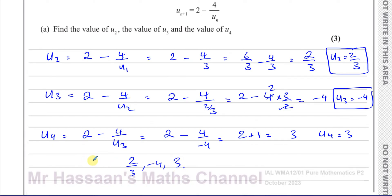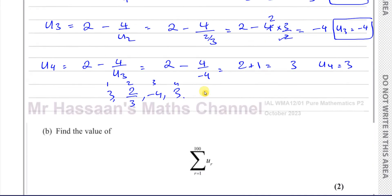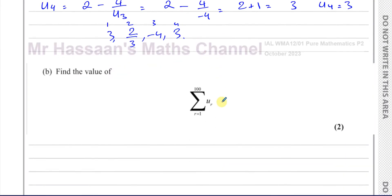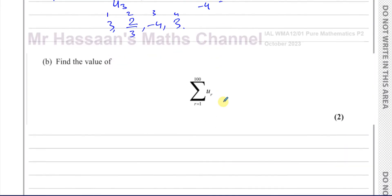If you look at the first term, it was actually 3 as well. So the first term, the second term, the third term, and the fourth term follow a repeating pattern. Now, how is that going to help us with part b?